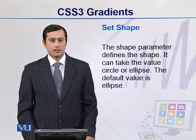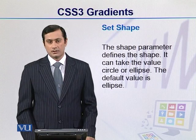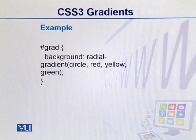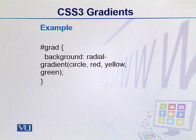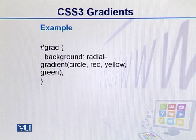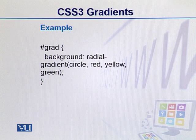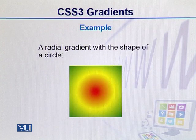We have two values for shape: ellipse and circle. The shape is the first parameter of radial gradient. Remember, this is an optional parameter. If you don't provide it, it will default to ellipse. In this particular case, we have circle mentioned, so it will create a radial gradient using a shape of circle.